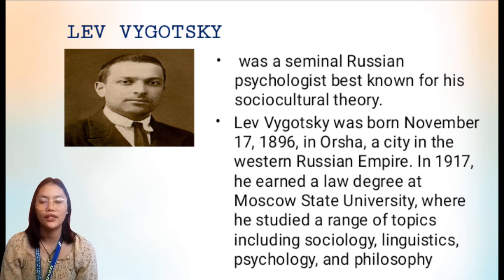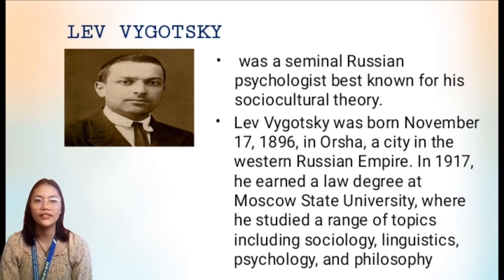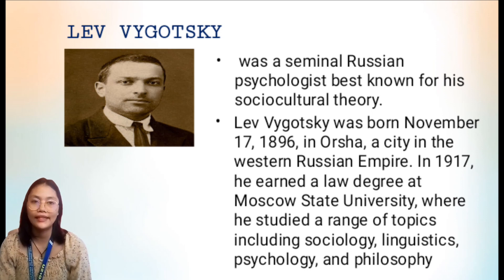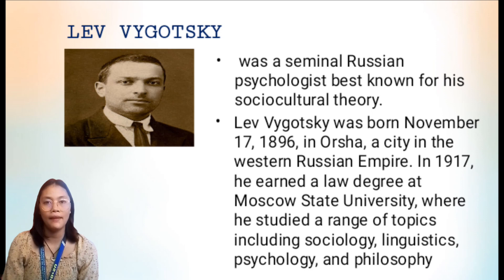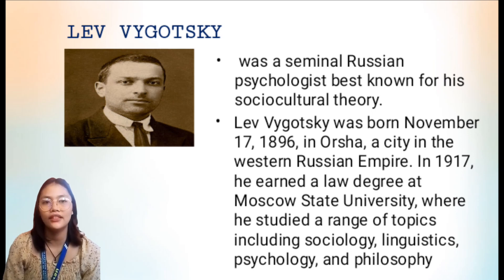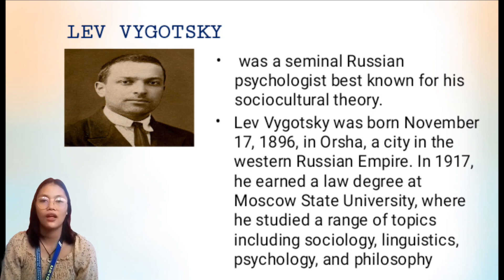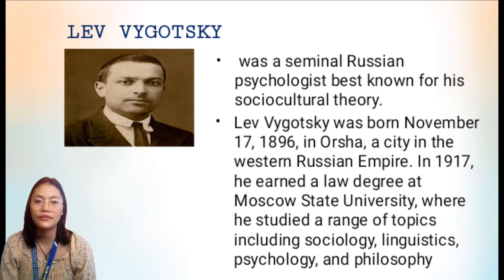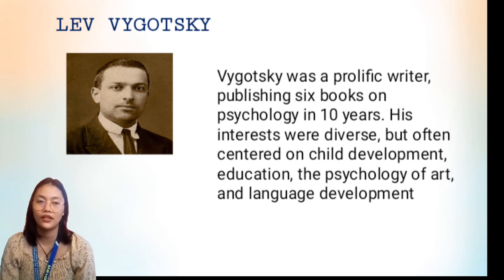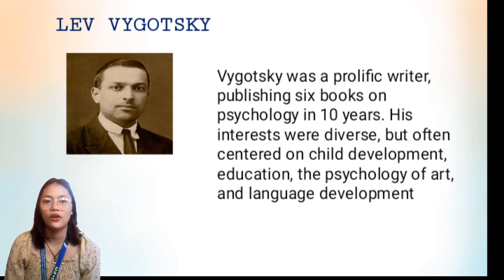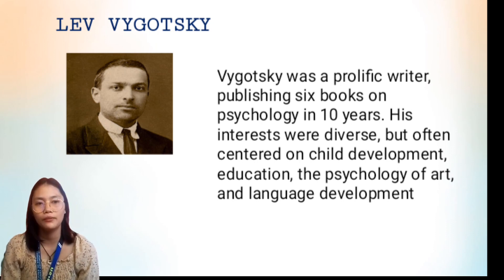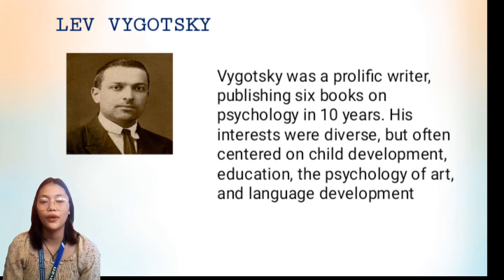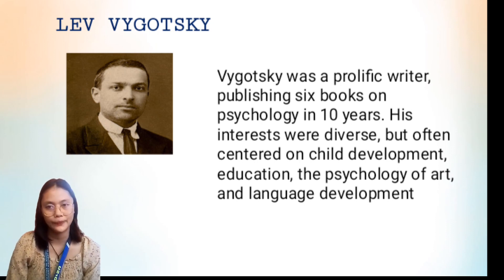Who is Lev Vygotsky? Lev Vygotsky was a seminal Russian psychologist best known for his sociocultural theory. He was born on November 17, 1896, in Orsha, a city in the Western Russian Empire. In 1917, he earned a law degree at Moscow State University, where he studied a range of topics including sociology, linguistics, psychology, and philosophy. Vygotsky was a prolific writer, publishing six books in psychology in ten years. His interests often centered on child development, education, the psychology of art, and language development. He developed several important theories about the way children learn and grow within their culture and society.